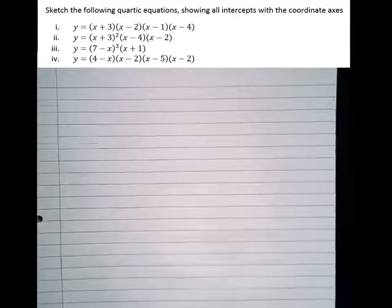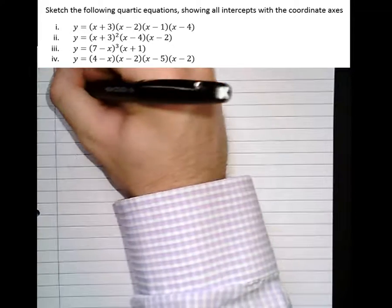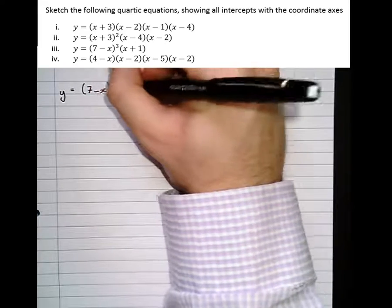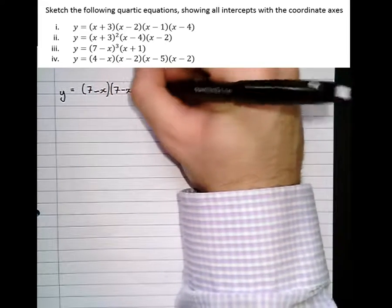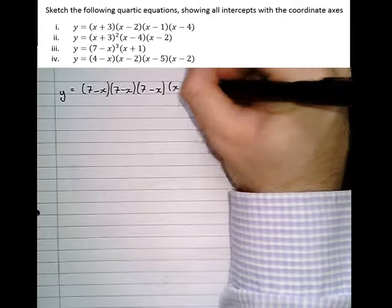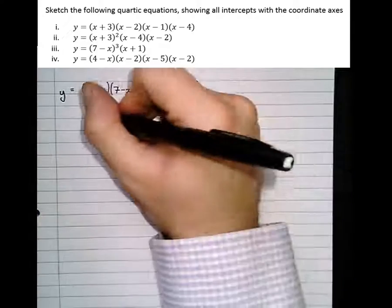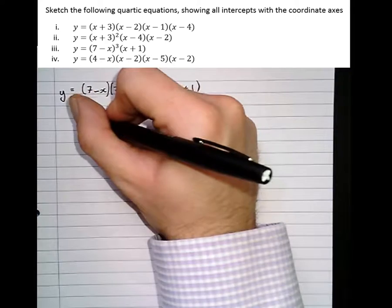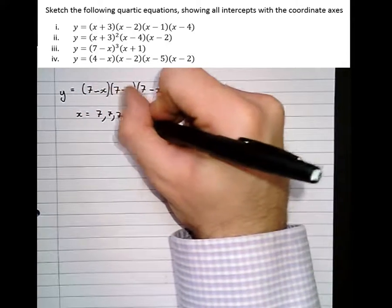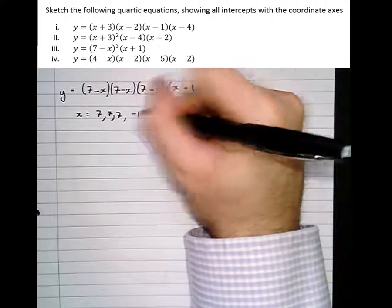We've got y equals (7 - x)³, so write it out in full: (7 - x)(7 - x)(7 - x)(x + 1). So we can see that the roots here are at x equals 7, three times, and a root of minus 1.